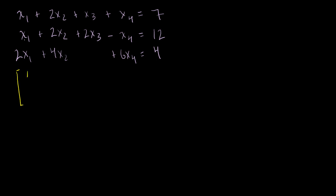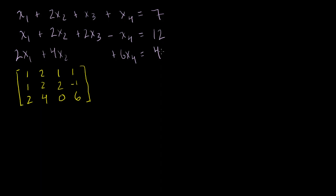So the coefficients are 1, 1, 2 for the first row; 2, 2, 4 for the second; and 1, 2, 0 for the third — there's no x3 term in that row so its coefficient is 0. Then we have 1, minus 1, 1, minus 1. Now I want to augment it with what these equations need to be equal to, so I draw a little line and write 7, 12, and 4. This right here is just another way of writing the original system.